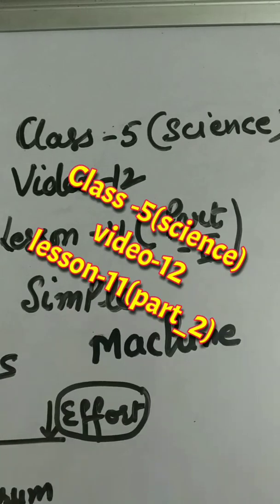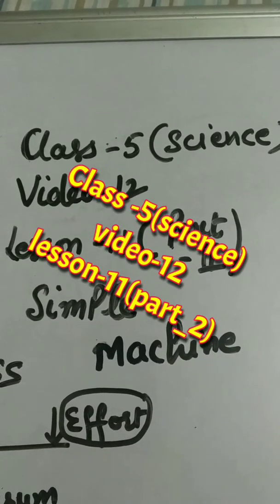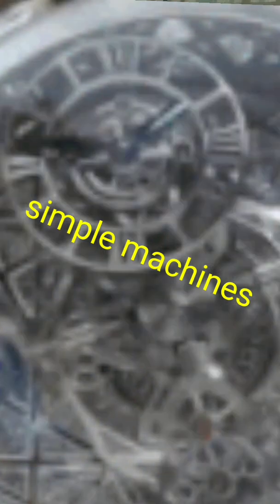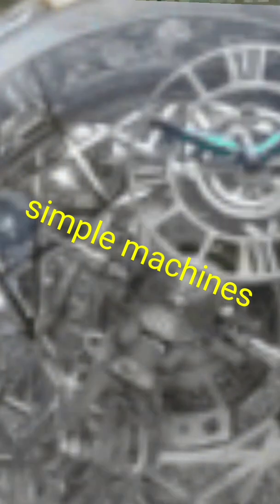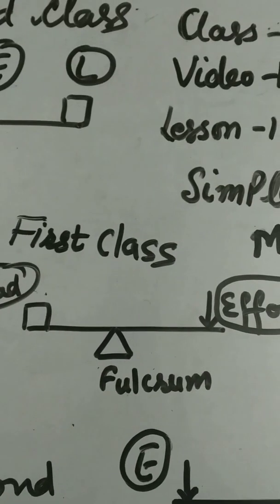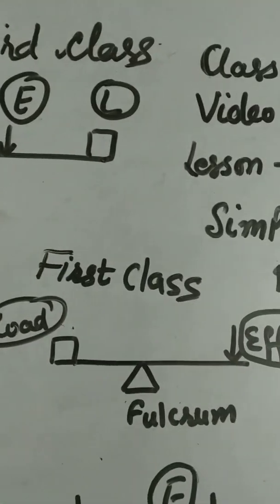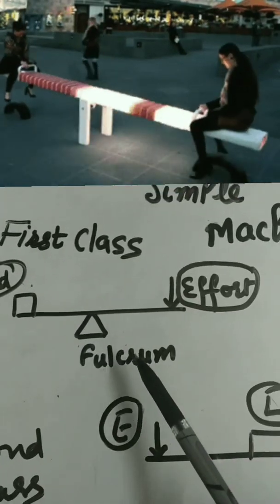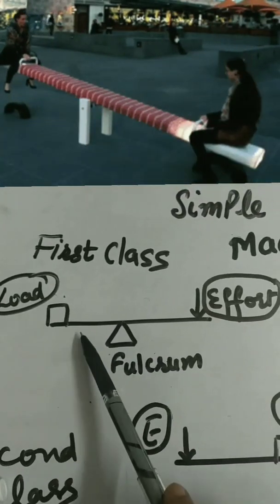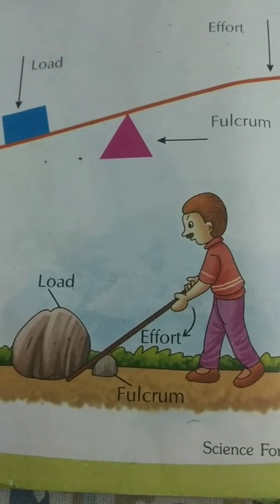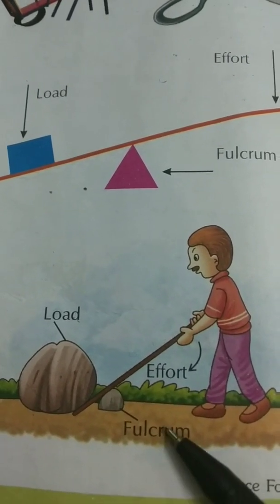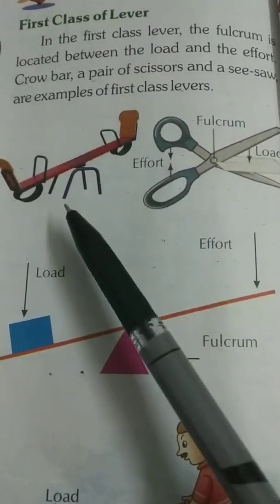Good morning students. Today is video number 12 and part 2 of lesson 11, Simple Machines of class 5th. In the previous video 11, we discussed the first class lever, in which the fulcrum is between the load and effort. We know examples that belong to the first class of lever, such as scissors.